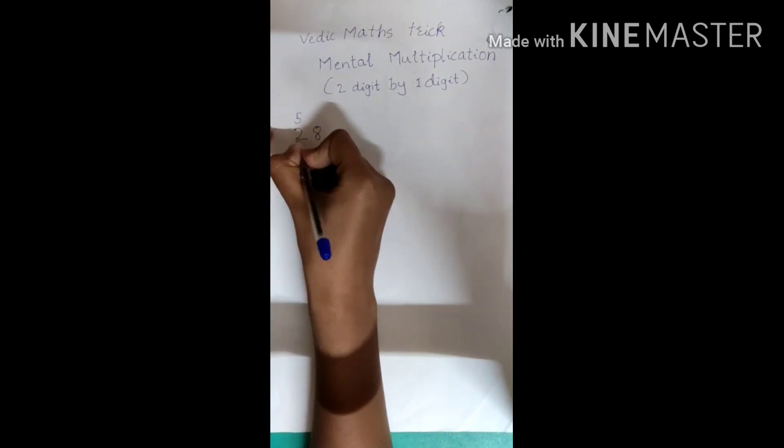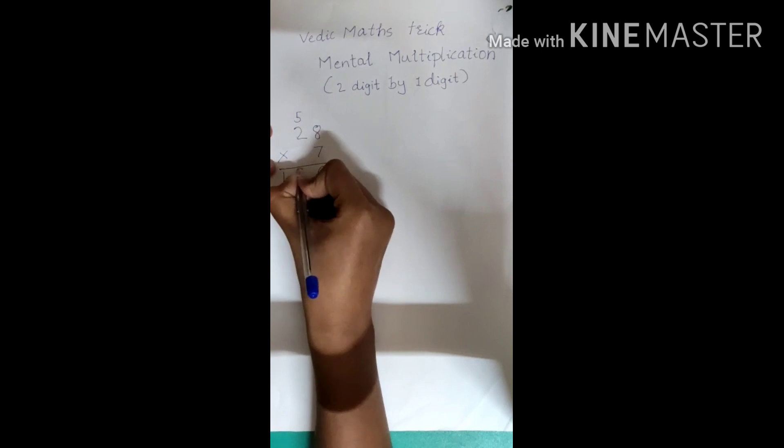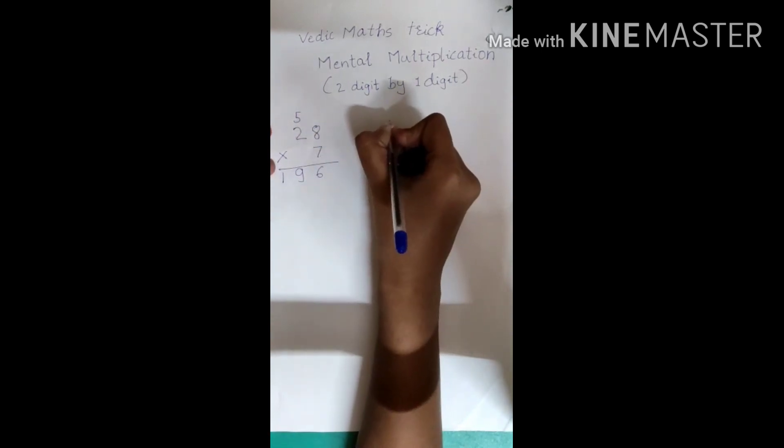5 carry over, 7 into 2 is 14, 14 plus 5 is 19, it's 196. We know the answer is 196.